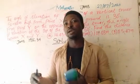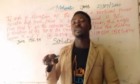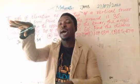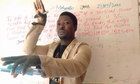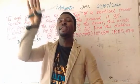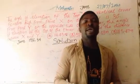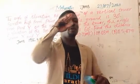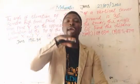Before we proceed, let's recall some basic aspects of angle of elevation and depression. The angle of elevation is the angle between the horizontal eye level and any object above the eye level. The angle of depression is the angle between the horizontal eye level and anything below the eye level.